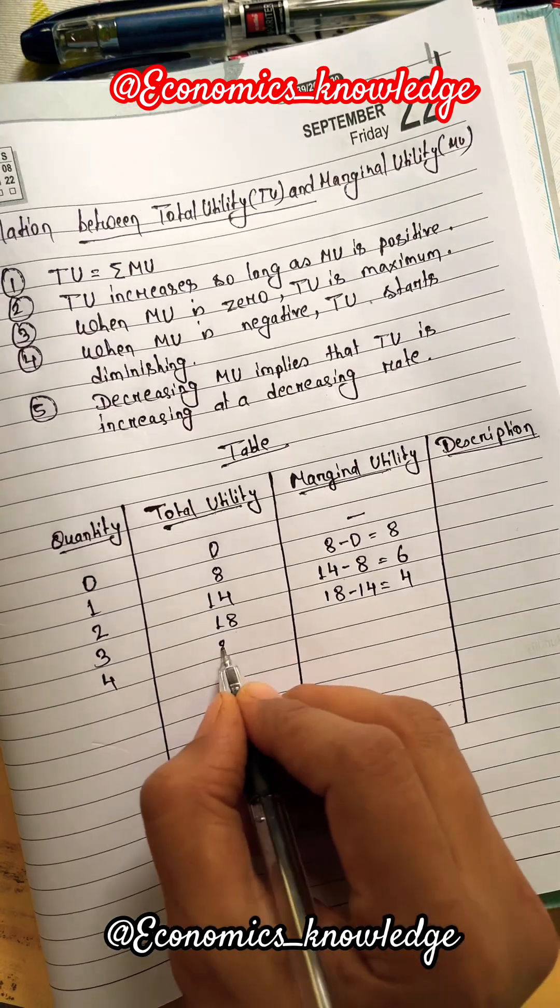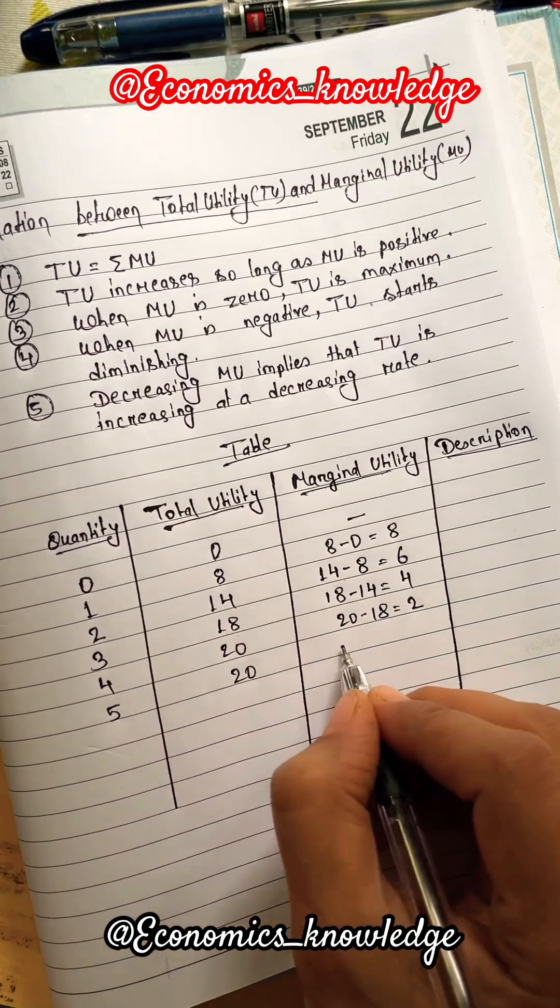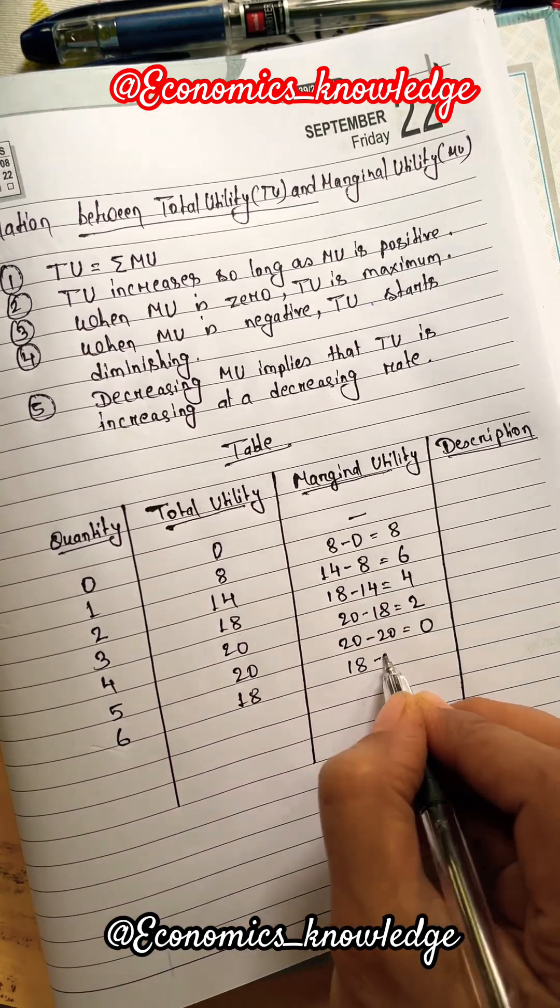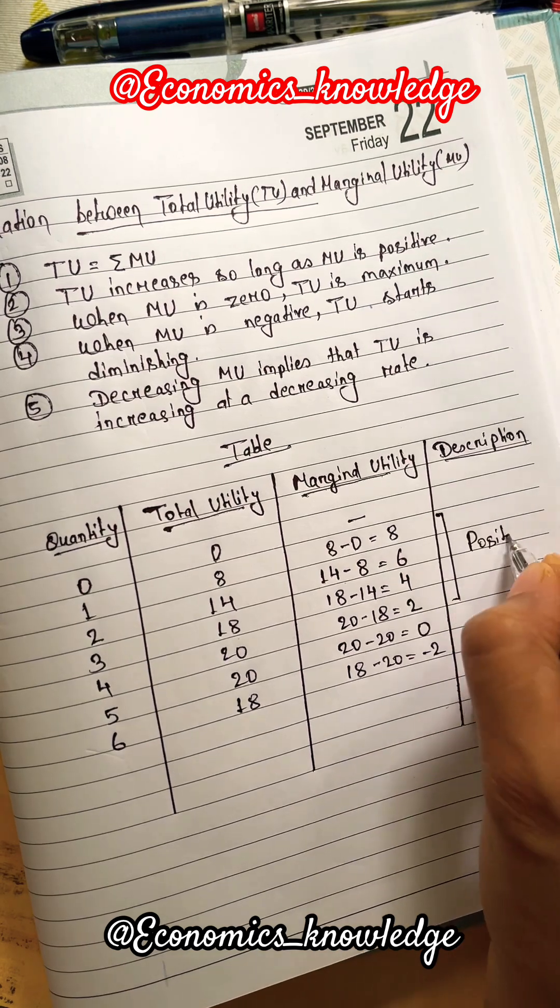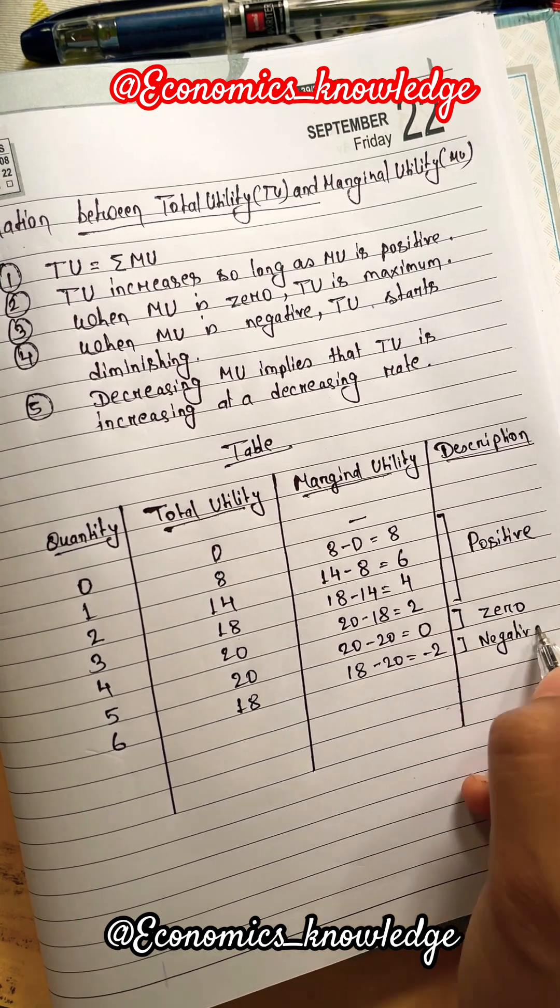Marginal utility is 8 minus 0 equals 8. So we will apply the formula of marginal utility and calculate the marginal utility. And here we will get the positive, 0, and negative marginal utility.